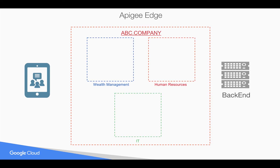Wealth management would like to have an organization where they develop API proxies, attach different policies, and modify the API behavior. Similarly, the human resources team would like to build out APIs but have their own control — for example, who can develop the APIs, who can see the APIs while they're getting built out, who can understand how the API is functioning, and who can trace, debug, or even deploy the APIs. Every team would like to have their own control while things are getting built out.